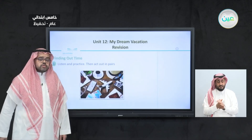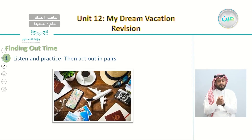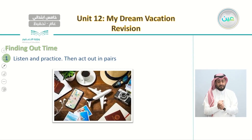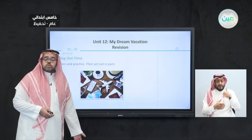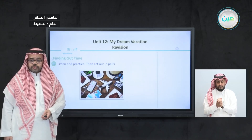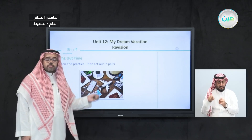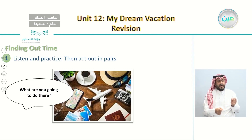The third question relates to this picture showing activities we usually do when traveling — different beaches, a camera, sunglasses, a hat, a cup of coffee, a map, and headphones. This picture represents the kinds of things we can do when traveling. The third question about activities is: What are you going to do there? So when you are going to this destination, what are the things you are going to do there?